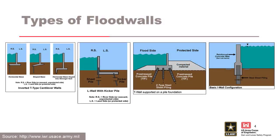Local protection projects utilize embankment levees and flood walls. Flood walls are generally used when space is limited and real estate couldn't be obtained — meaning they're in urban areas, used when there's not enough space to build larger embankment systems. There's a wide variety of flood walls available.